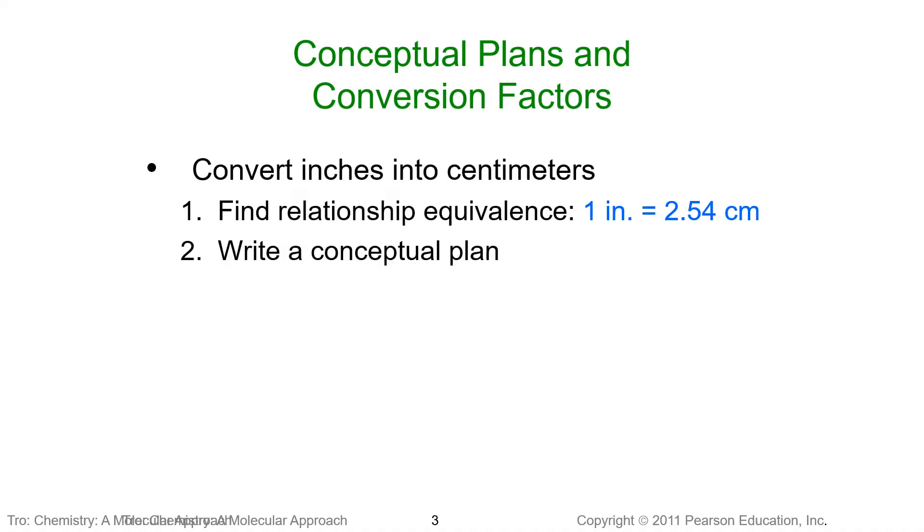We want to set up and think about how we're going to proceed in our conversion. We want to make sure that we find a relationship if we're going to convert inches to centimeters. We have a relationship that says one inch is exactly equal to 2.54 centimeters. Now one inch was changed so that this is an exact conversion. After the four there's an unlimited number of zeros. We're going to write a conceptual plan. We're going to start with our inches and using that relationship convert to centimeters.